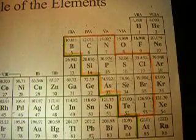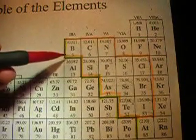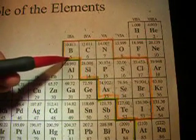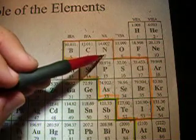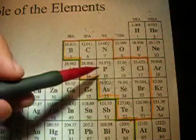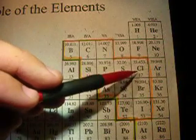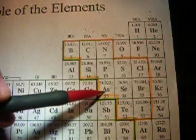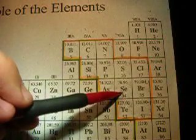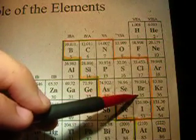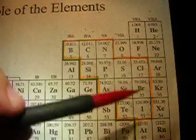Over here we have the first one. We have boron, carbon, nitrogen, silicon, phosphorus, sulfur, chlorine, arsenic, selenium, bromine, tellurium, and iodine.